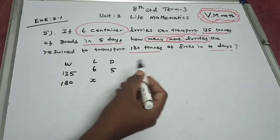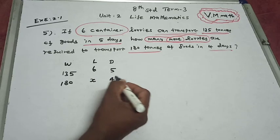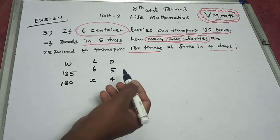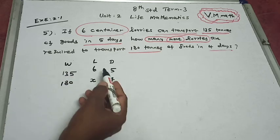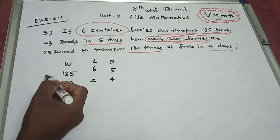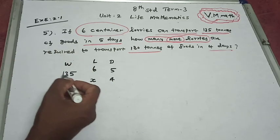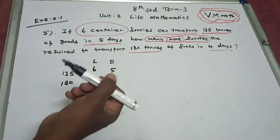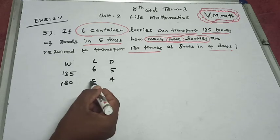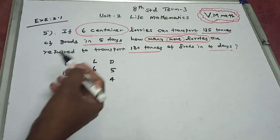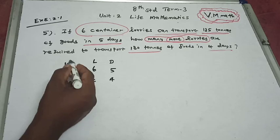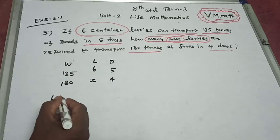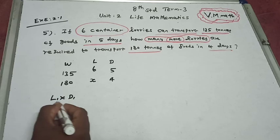The number of days is 4, and we need to transport 180 tons. Now we generate a formula. In the first row we have w1, l1, d1, and in the second row we have w2, l2, d2. The formula is: l1 into d1 divided by w1 equals l2 into d2 divided by w2.